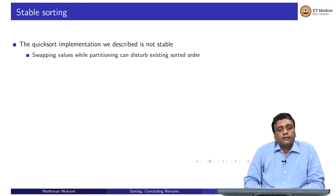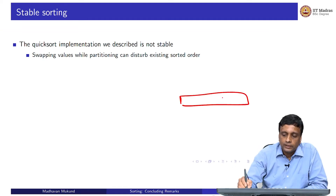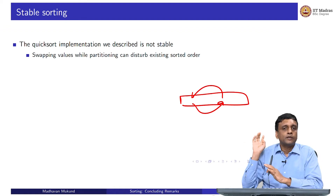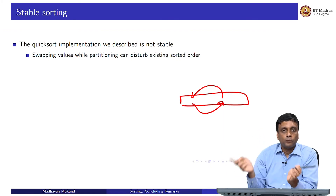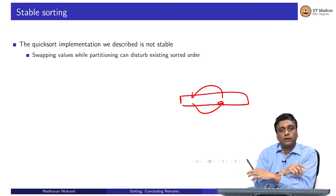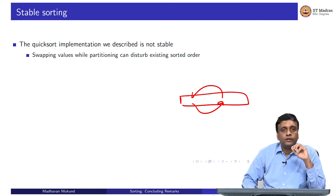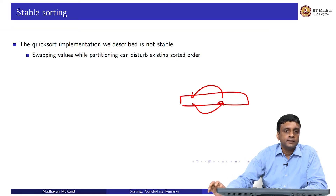Unfortunately, the quicksort implementation we looked at is not going to be stable, because it does all these sudden exchanges. The values were originally in some order with respect to a value you are not using right now for sorting. While partitioning, you are swapping things around, and you might be exchanging things which are equal in some other key. The partitioning of quicksort has to be very carefully done to make sure it is stable — it is possible, but not with the partitioning we saw.